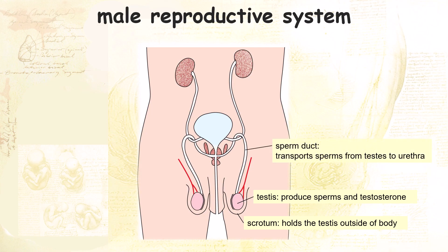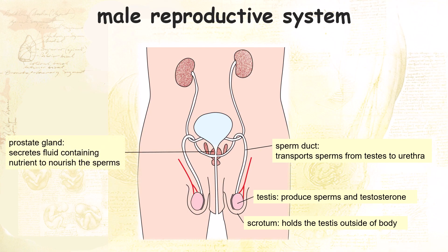The sperm duct connects the testis to the urethra, allowing the sperm to travel through. The prostate gland secretes nutrients that nourish the sperm. The mixture of fluid and sperm is known as semen.